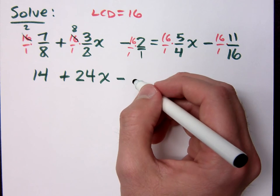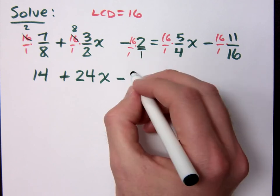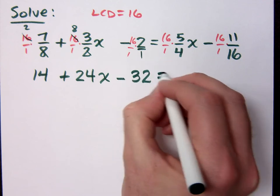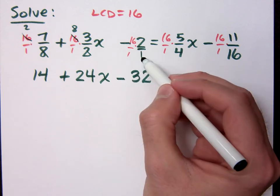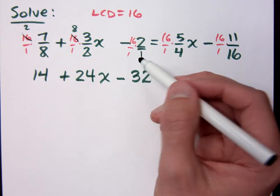Minus 16. That's 16 times 2, right? Wait, yeah. So that's just going to be 32. See, the 16 didn't have anything to reduce with. It's just a 1, right? So it's just straight up 16 times 2 is 32.